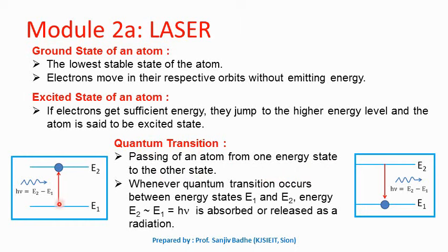Whenever a quantum transition occurs between energy level E1 and energy level E2, energy equal to E2 minus E1 is either absorbed or released. When the atom goes from lower energy level E1 to higher energy level E2, it needs energy hν equal to E2 minus E1, which is absorbed. When the atom jumps from higher energy level E2 to lower energy level E1, energy hν equal to E2 minus E1 is released in the form of a photon.